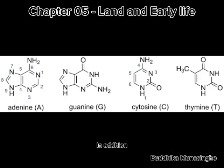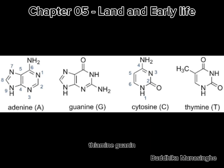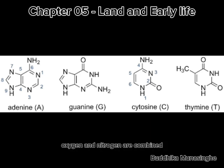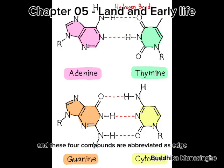In addition, four special compounds were formed: adenine, thiamine, guanine, and cytosine. Carbon, hydrogen, oxygen, and nitrogen are combined in these four compounds, which are abbreviated as ATGC.